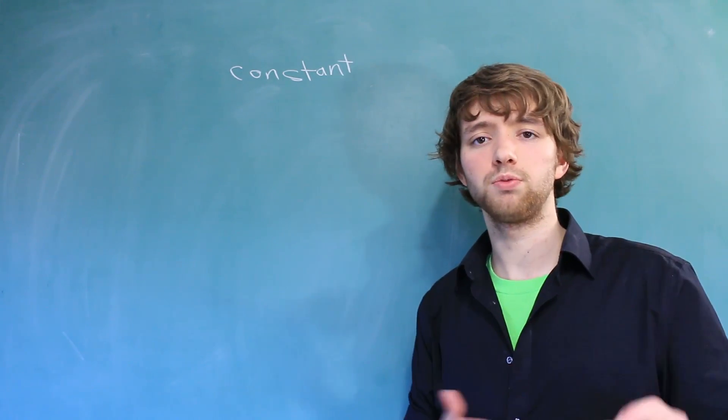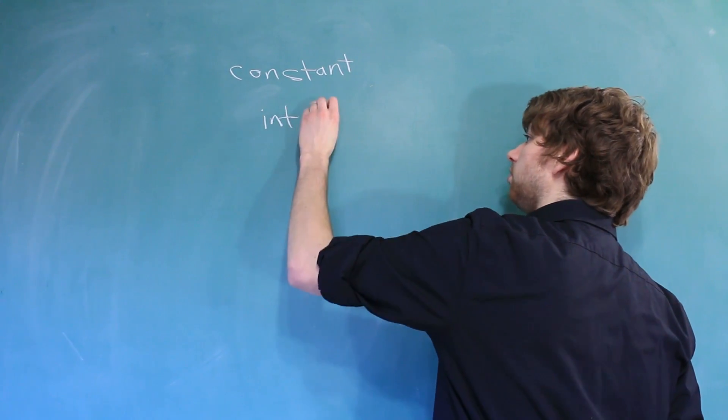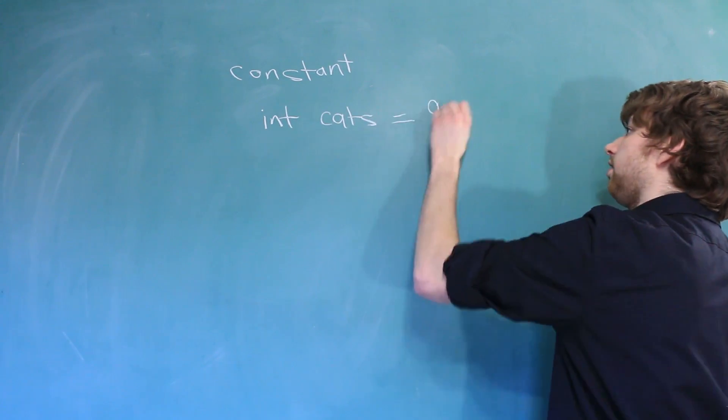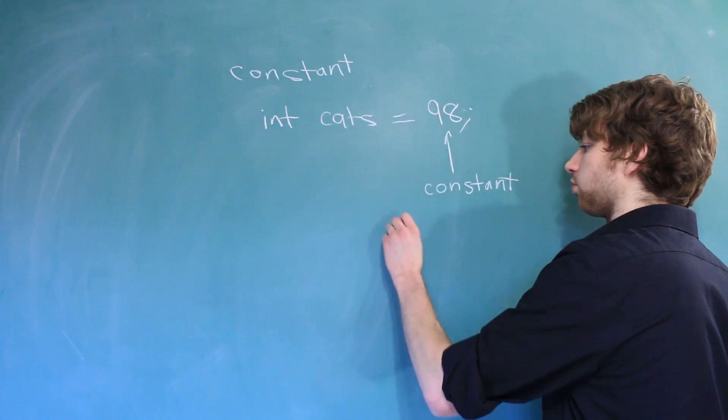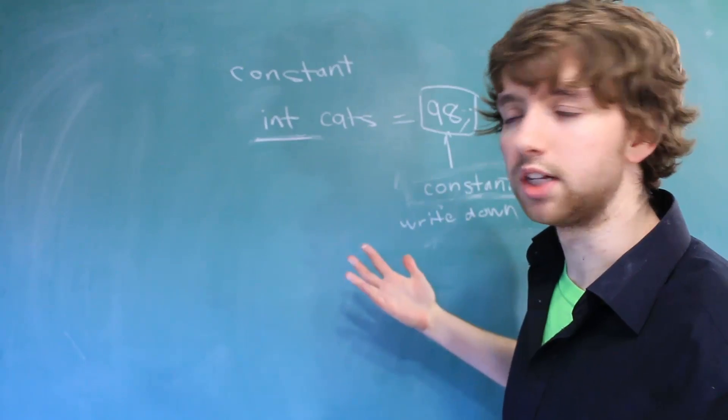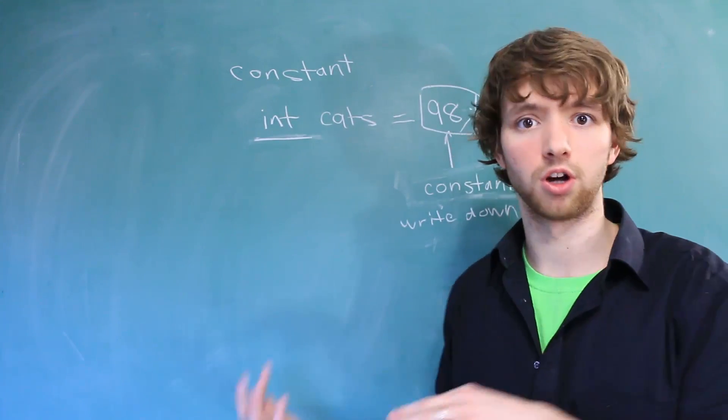There's also another definition, which is just a value. So if we declare a variable, the number of cats I have, this here is a constant. Think of a constant as something you can write down. Usually it's pretty clear, but let's go over some examples of different ways you can write similar constants.